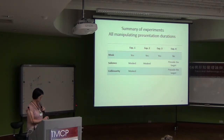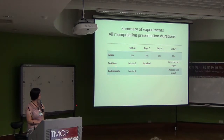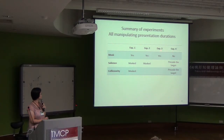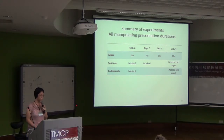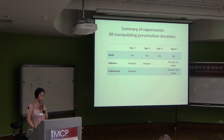We have four experiments to present today. In the first three experiments we try to create a mask. In Experiment 1, the mask can mask both salience and collinearity information. In Experiment 2, the mask is effective only for salience information. In both experiments we found the task was too difficult, so we have Experiment 3 where the mask is just a cross on the screen. In Experiment 4, we have the search display precede the target to see whether the effect is still present.